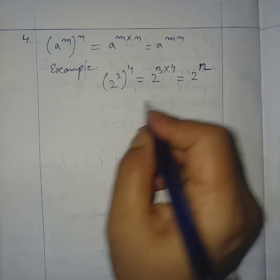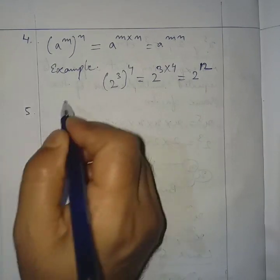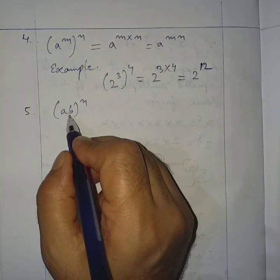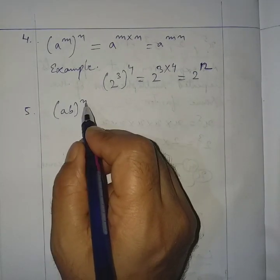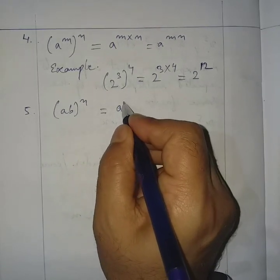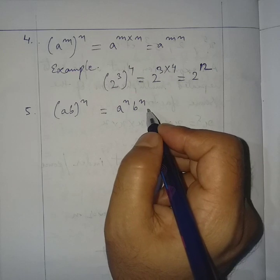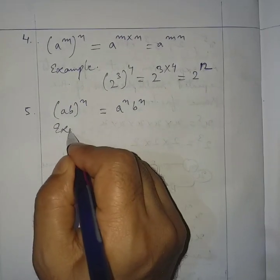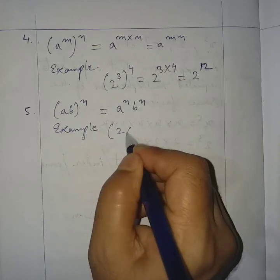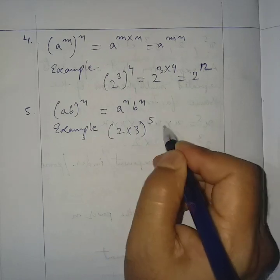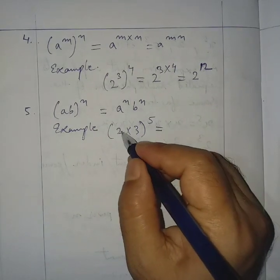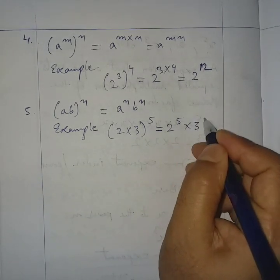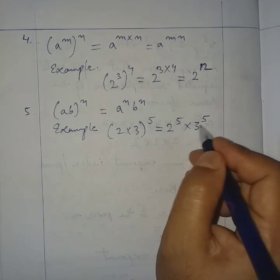Law number 5: (a × b)^n = a^n × b^n. When two numbers are multiplied and raised to a power, we can distribute the power to each factor. Example: (2 × 3)^5 = 2^5 × 3^5.